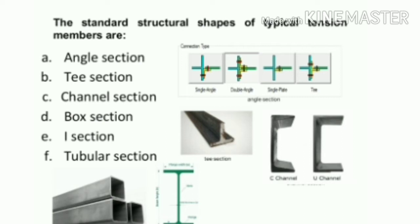Single angle sections have the disadvantage of eccentricity in both planes at rivet connections, while channel sections have eccentricity in one axis only. Single channel sections have high rigidity in the direction of the web and low rigidity in the direction of the flange. Occasionally I-sections are used as tension members — I-sections have more rigidity and single I-sections are more economical than built-up sections.